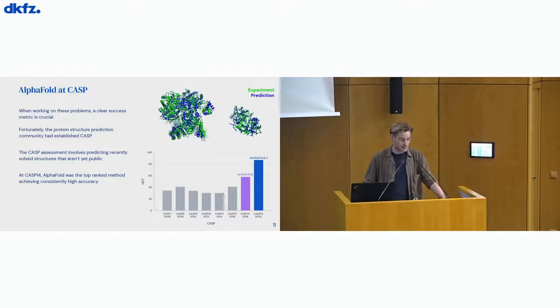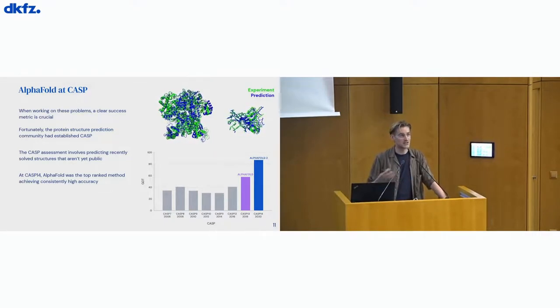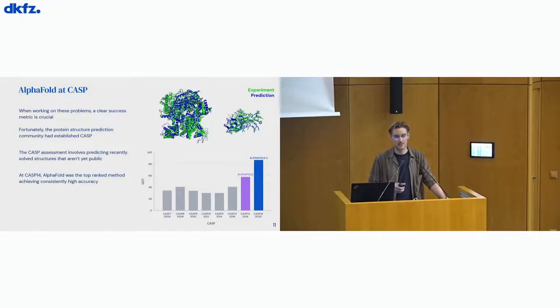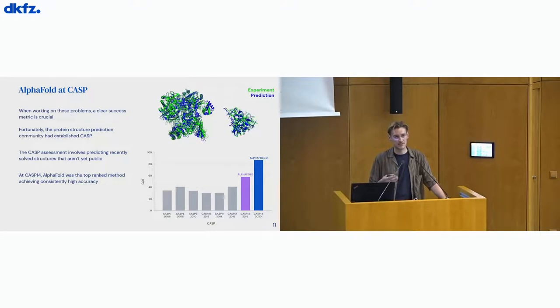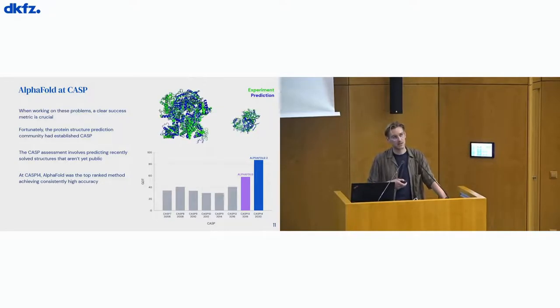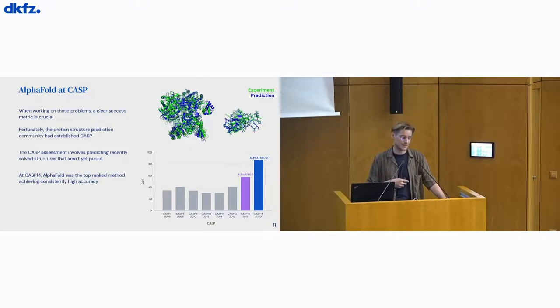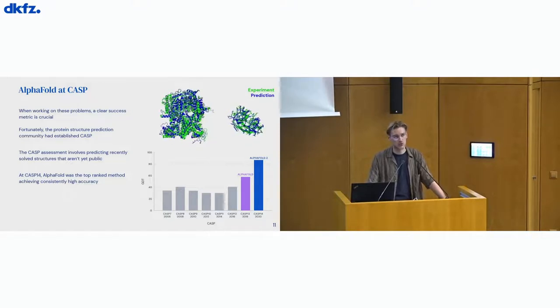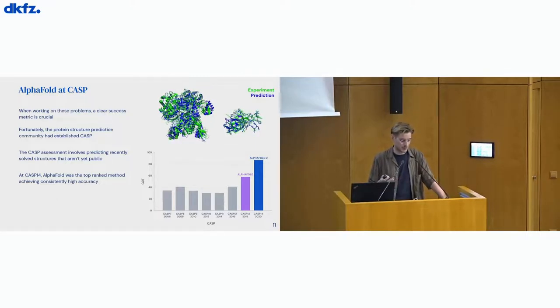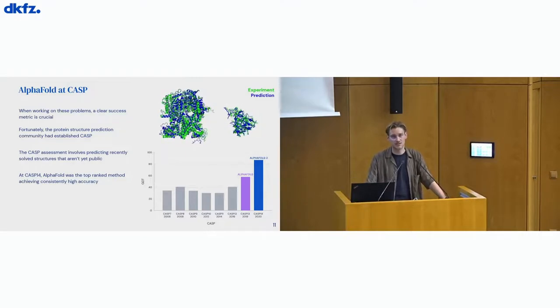Okay, so AlphaFold was evaluated and sort of introduced, if you will, at CASP. And really, when working on fundamental problems such as these, what's really crucial is to have a clear success metric, such that you can iterate in silico on that problem. And fortunately, the protein structure prediction community had provided us essentially with the means to do that. They had established a biannual assessment of structures that's called CASP. And this CASP assessment involves predicting recently solved structures that are therefore not known to the community. They're really held out. And therefore, this is a unique and fair test bed to test structure prediction algorithms against one another.